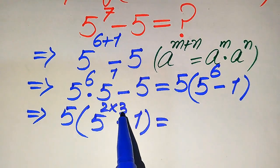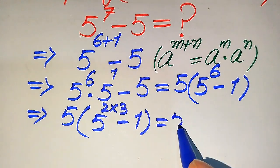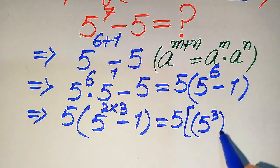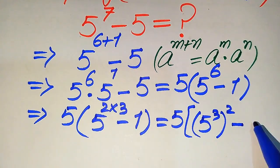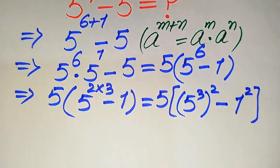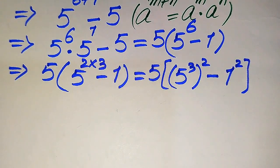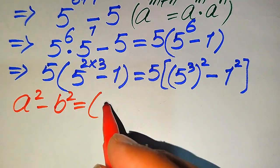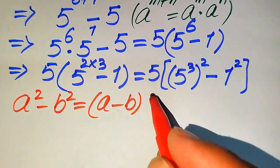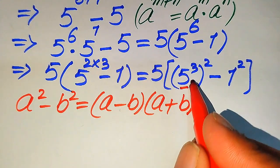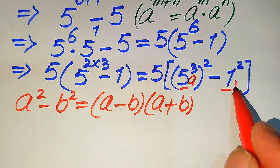Using another exponential law, we move the 3 inside and it becomes 5 times (5 cubed) whole squared minus 1 squared. Now we apply the algebraic identity a squared minus b squared equals a minus b times a plus b.